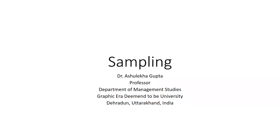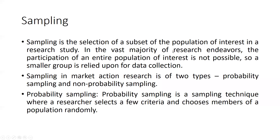Let's begin with what is sampling and sampling methods. Sampling is needed because when we have a large size of population, it's not possible to take into consideration each and every person. Sampling is the selection of a subset of the population of interest in a research study. In the vast majority of research endeavors, the participation of an entire population of interest is not possible.